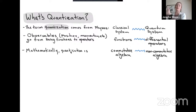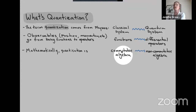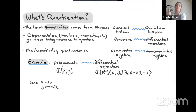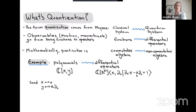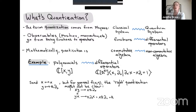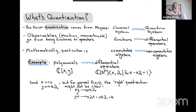Mathematically, building on this, quantization is the process of starting with some commutative algebra and then building a non-commutative version from it. For example, starting with polynomials in two variables, we might quantize to differential operators — multiplication by x and partial differentiation by x — which don't commute because of the product rule. For a general polynomial f, the right quantization may not be clear, since x times y equals y times x but plugging in the map gives different operators.